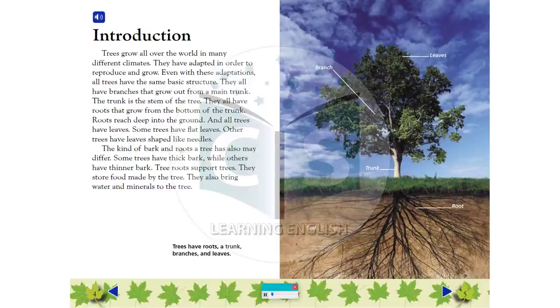Introduction: Trees grow all over the world in many different climates. They have adapted in order to reproduce and grow. Even with these adaptations, all trees have the same basic structure.